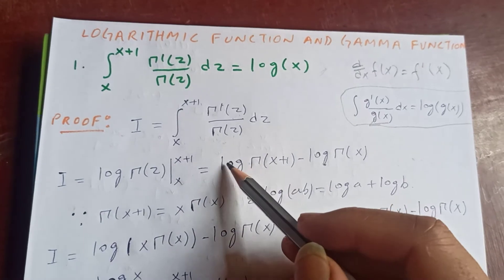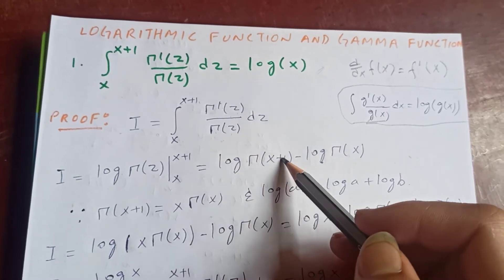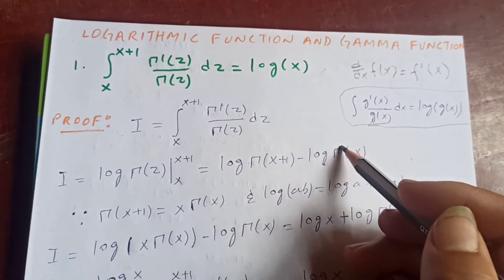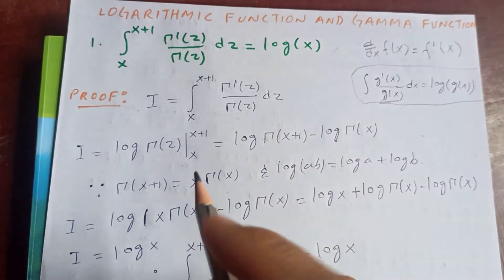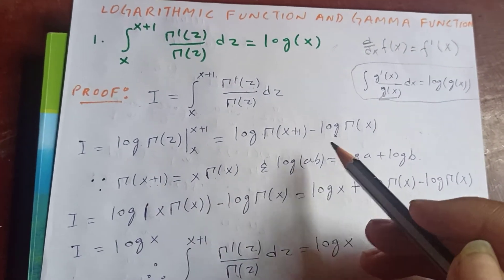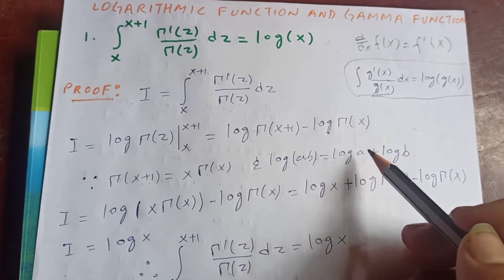From x to x plus 1, which is log gamma of x plus 1 if you substitute, minus log gamma x. Then since we know that gamma of x plus 1 is x times gamma x, and log ab is log a plus log b.